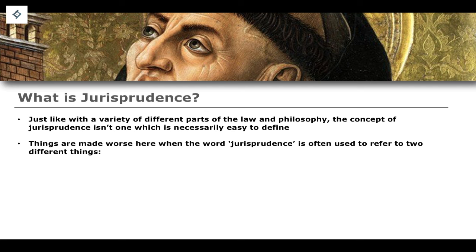Things are made worse with the word jurisprudence because it is often used, at least within the context of the legal tradition, to refer to two different things. It can refer to case law. For example, if I'm talking about public international law, I might refer to the jurisprudence of the International Court of Justice — the ICJ — meaning the various cases and precedents established by the ICJ, or jurisprudence within the context of criminal law in the common law jurisdiction of England and Wales. Again, that refers to case law.